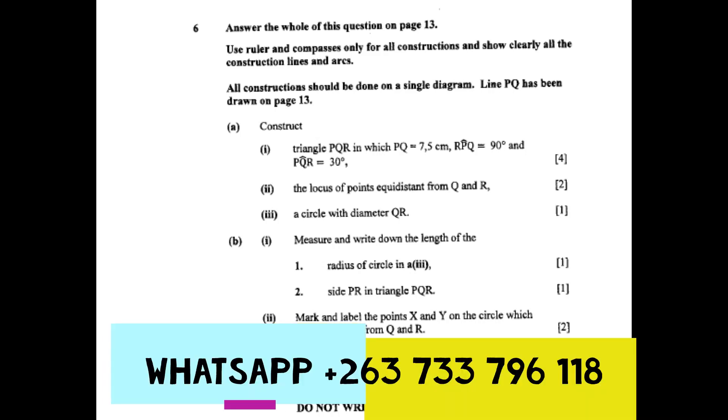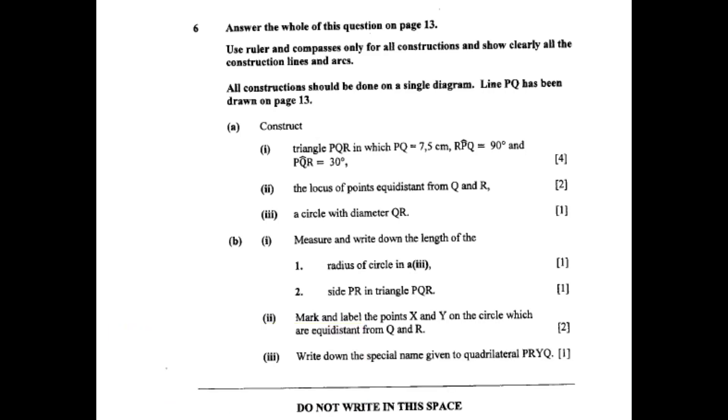Today we're going to look at June 2018 locus questions. The same rules apply: use rulers and compasses only for all constructions. This must be done on a single diagram.